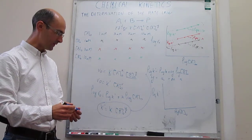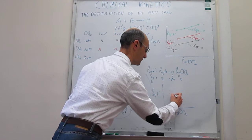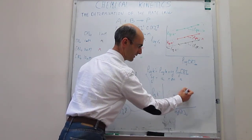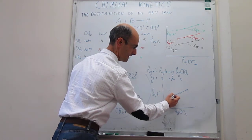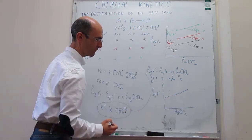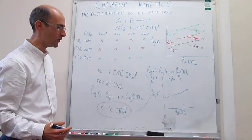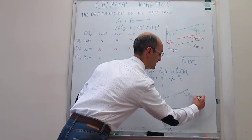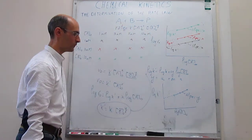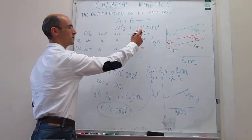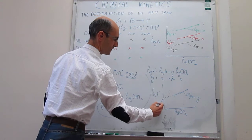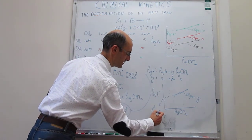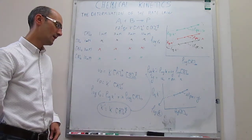We have those three points which we can fit with a straight line. The slope of that line is Y, which is the order of the reaction with respect to B, and the intercept with the y-axis is log of the rate constant K, from which we can obtain K directly.